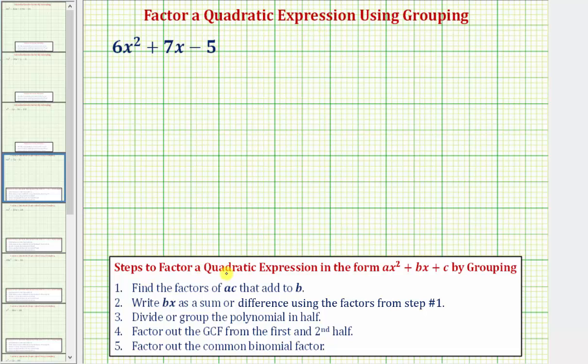The steps to factor a quadratic expression in the form ax² + bx + c by grouping are shown below, where step one is to find the factors of ac that add to b.